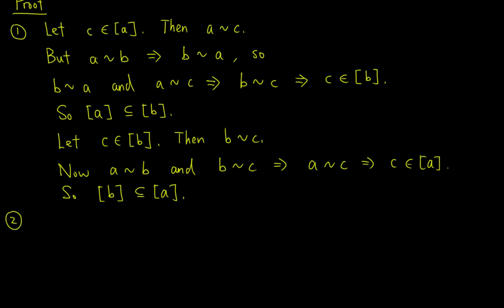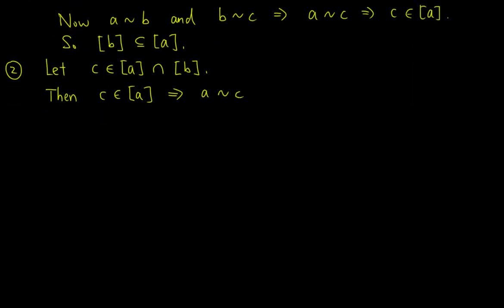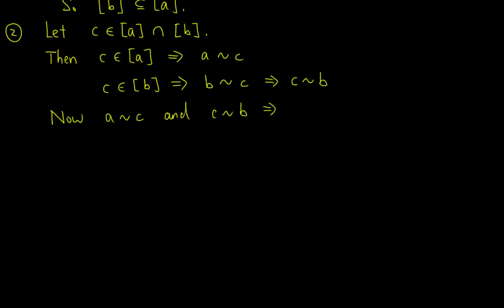For the second result, it suffices to show that whenever two equivalence classes have a common element, they must in fact be the same. Let C be an element of the intersection of the two equivalence classes. Since C lies in the equivalence class of A, A is related to C. Since C lies in the equivalence class of B, B is related to C, which we write as C is related to B since R is symmetric. Now A is related to C and C is related to B, so A is related to B since R is transitive. Using the first result, the equivalence class of A equals the equivalence class of B.